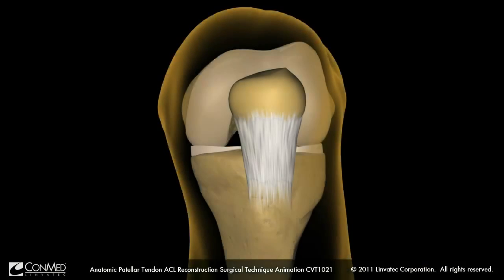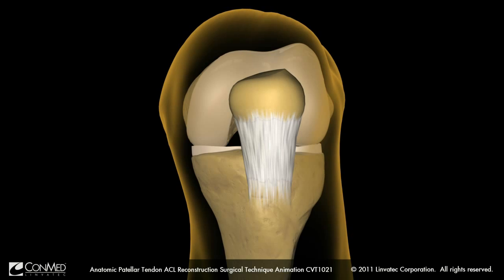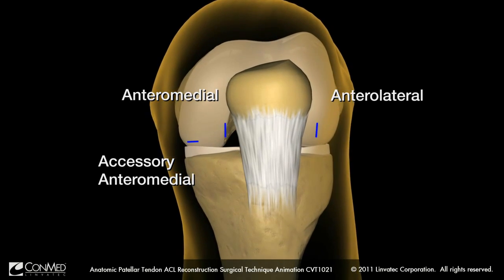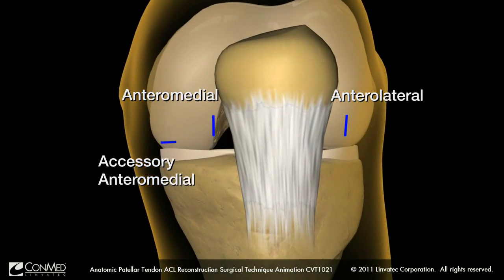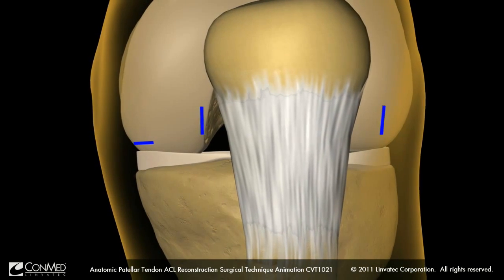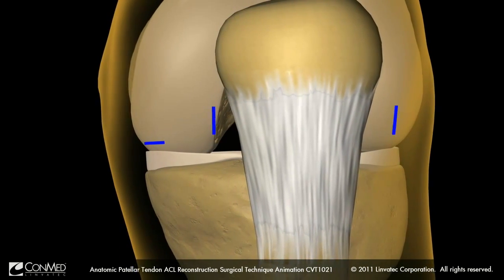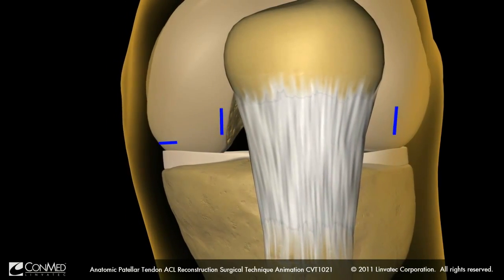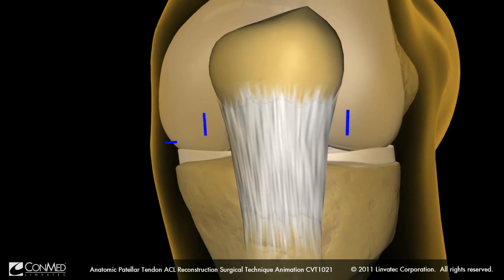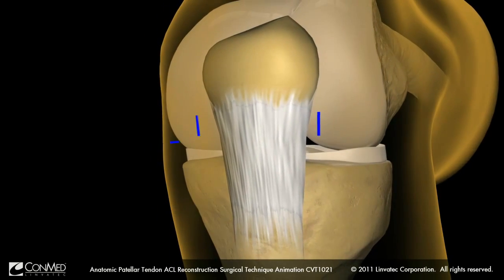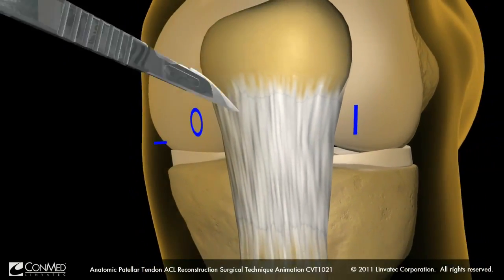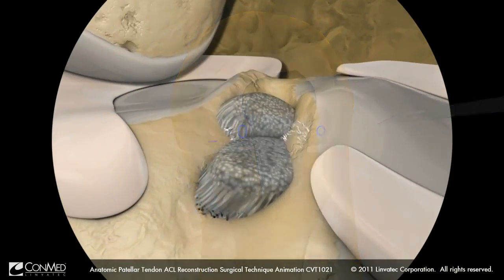Arthroscopic surgical approach for anatomic ACL reconstruction requires three portals: an anterolateral, an anteromedial, and an accessory anteromedial. The standard anteromedial portal will be used for arthroscopic visualization and should be placed close to the patellar tendon and adjacent to the inferior pole of the patella. The accessory anteromedial portal will be used for drilling and should be lower and more medial than the anteromedial portal. With the surgical markings in place, incise the anteromedial and anterolateral portals.